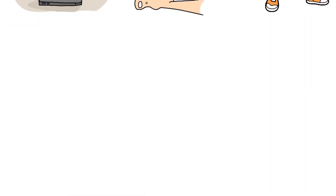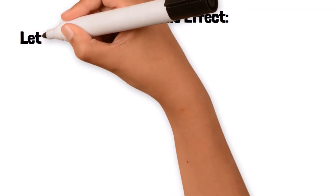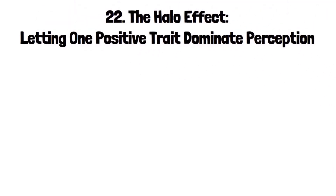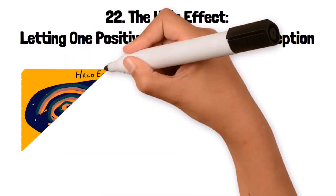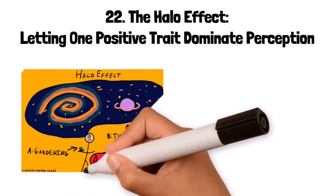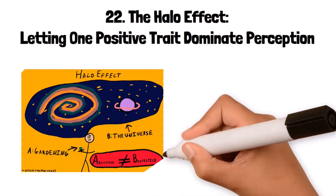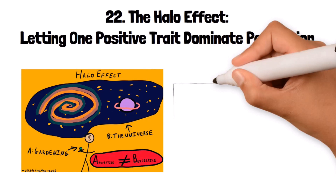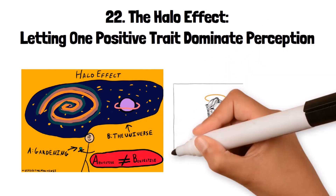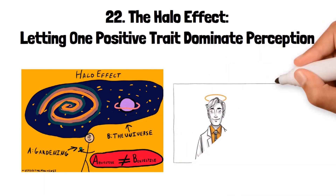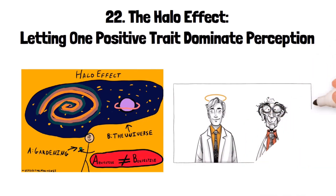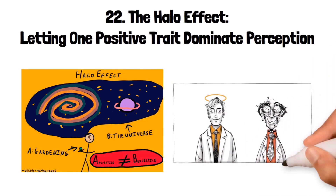22. The Halo Effect: letting one positive trait dominate perception. The halo effect is a bias where the perception of one positive trait influences the perception of other traits of a person or thing. For example, if someone is perceived as attractive, others might also assume they are intelligent, kind, or competent. This bias can lead to overgeneralizing based on a single trait, potentially leading to incorrect or unfair judgments about a person's overall abilities or character.